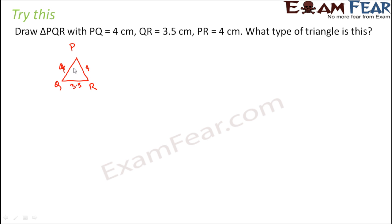Basically PQ and PR are equal in length. So that means two sides of the triangle are equal. The triangle for which two sides are equal is called isosceles triangle. So what type of triangle is this? It is isosceles triangle.